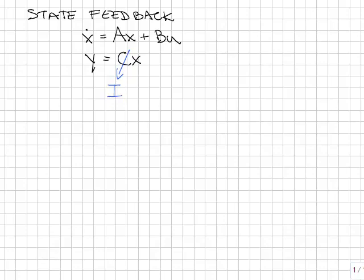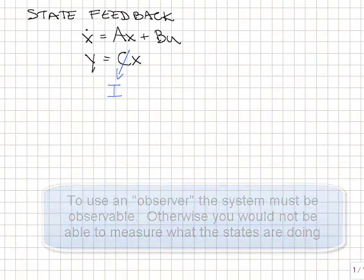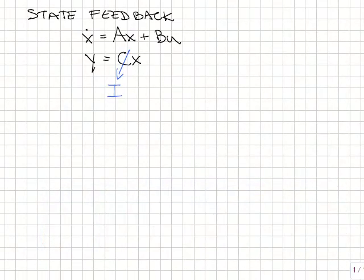In many cases, this doesn't happen, and so state feedback is somewhat contrived. However, there's a second step, which we're not going to look at in this state, which is called creating an observer, which lets you take an output y which doesn't directly measure all of these states and predict what the value of the states are so that you could then use this state feedback method.